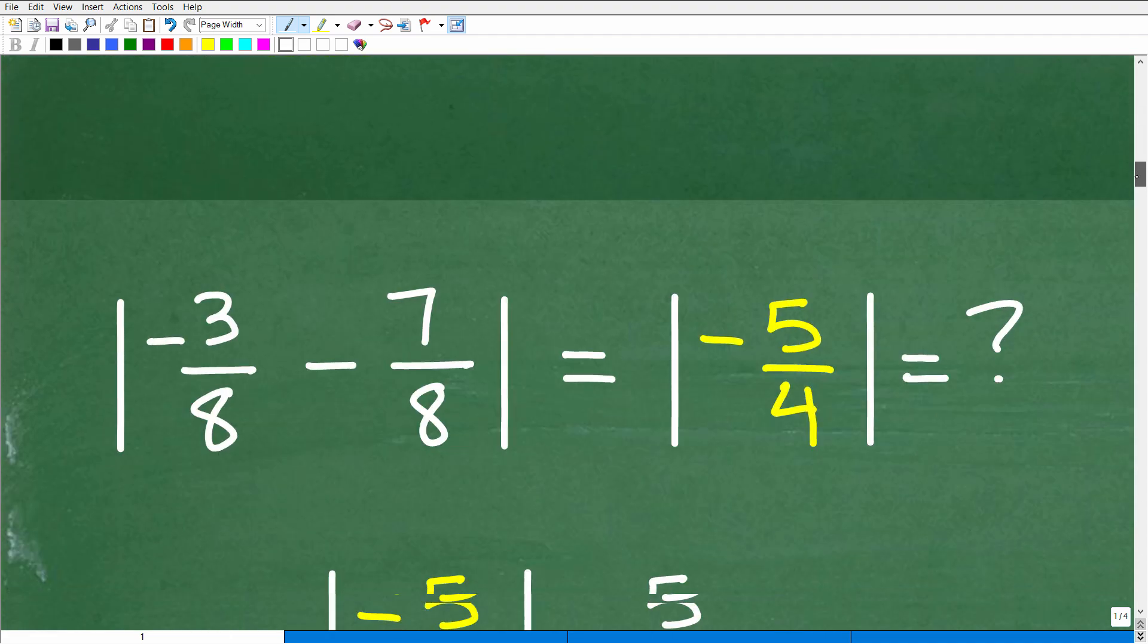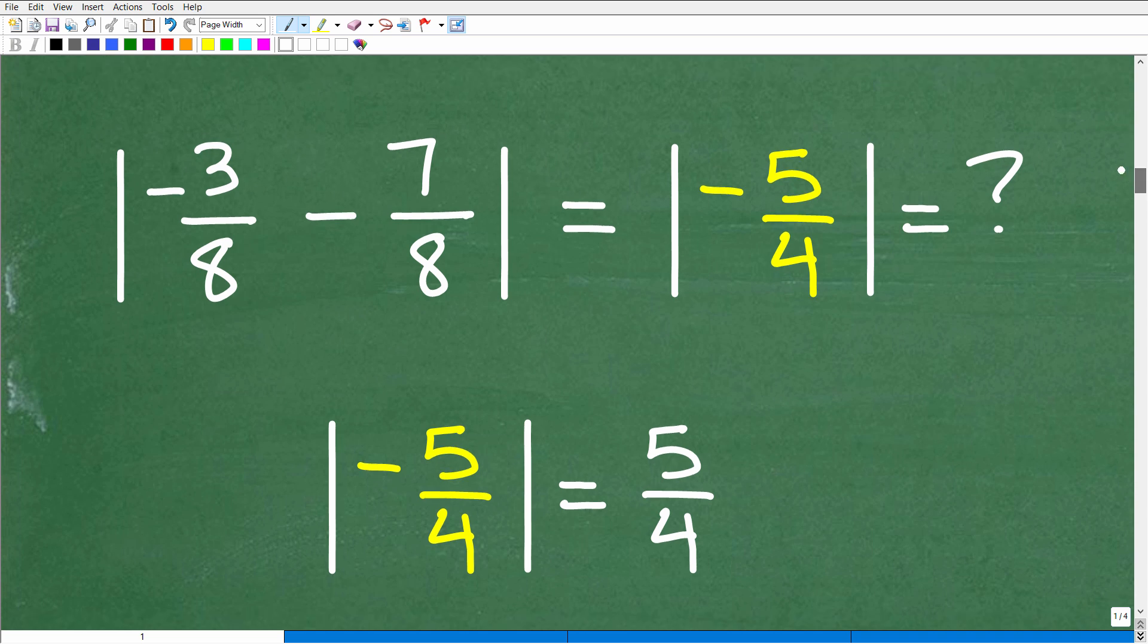All right, so what does that mean? Well, let's take a look at what this means. So here we have the absolute value of negative 3 8ths minus 7 8ths. We know that is equal to negative 5 over 4. So the equivalent problem is the absolute value of negative 5 over 4. Okay, that's what our problem is really distilled down to. And the answer is a positive 5 4ths. All right, so that is the answer.